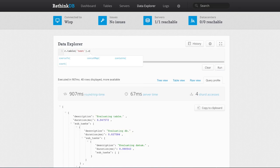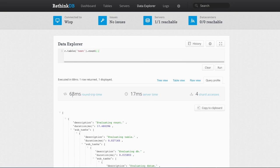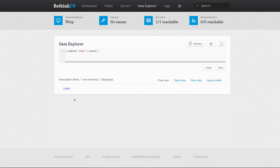If I instead do, say, a count query, you can see the profile shows that the round trip time is much closer to the server time. And that's because we're only sending over a single number rather than a giant batch of data.